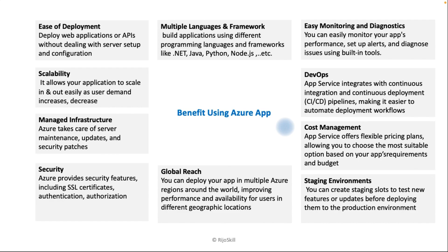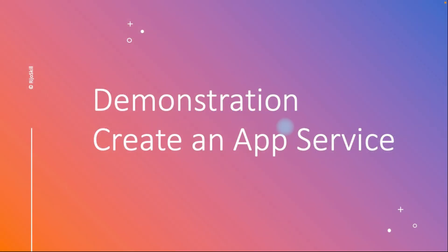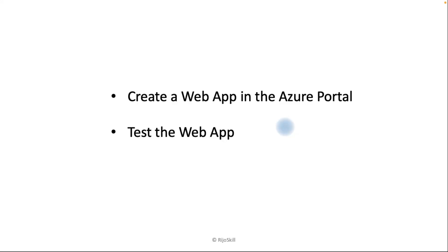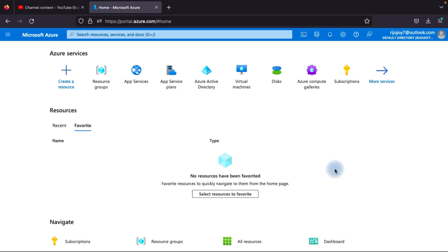Now you understand the benefits of Azure App Service. Next, we will go for the demonstration: creating an App Service. We will create a web app in the Azure portal and test the web app. Let's go to the Azure portal now.